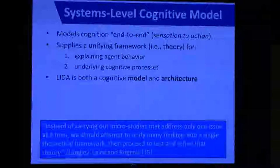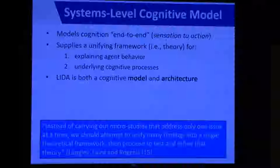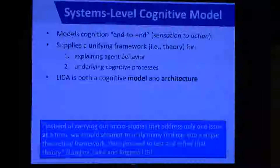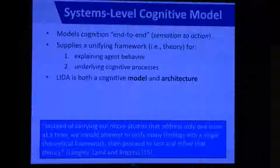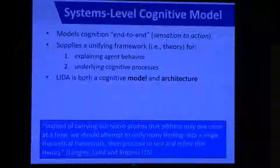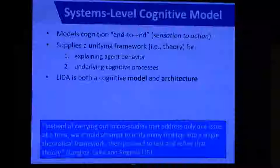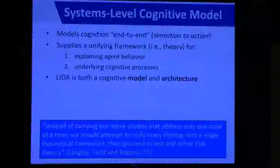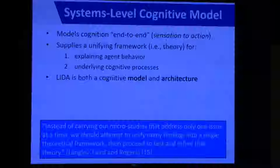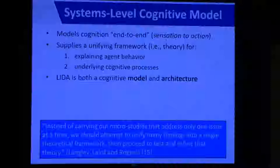LIDA is a systems-level cognitive model, meaning it is concerned with cognition end-to-end — everything from sensation to action. This contrasts with a component-based cognitive model that might only consider one particular aspect of cognition. A systems-level cognitive model supplies a unifying framework — in other words, a theory — that explains agent behavior and the underlying cognitive processes that support it. LIDA is also a systems-level cognitive architecture, which solves the engineering problem of creating agents that support scientific discovery through experimentation.